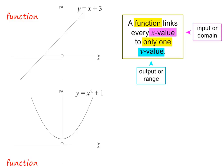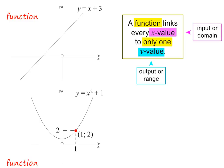This parabola is also a function. Again, the reason is because each x value is linked only to one y value. For example, x equals minus 2 is linked to only y equals 5. And x equals 1 is linked only to y equals 2. And x equals 2 is linked only to y equals 5. In other words, each element in the domain is linked only to one element in the range.